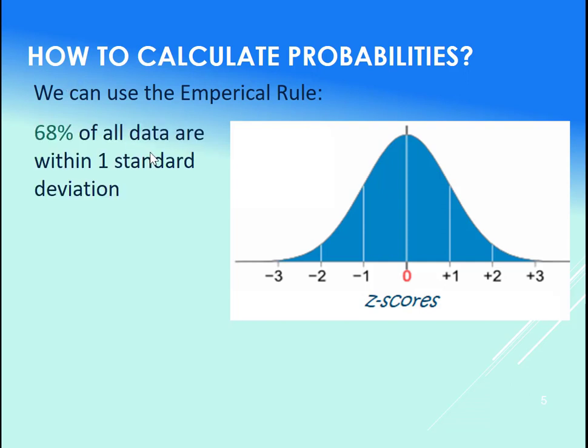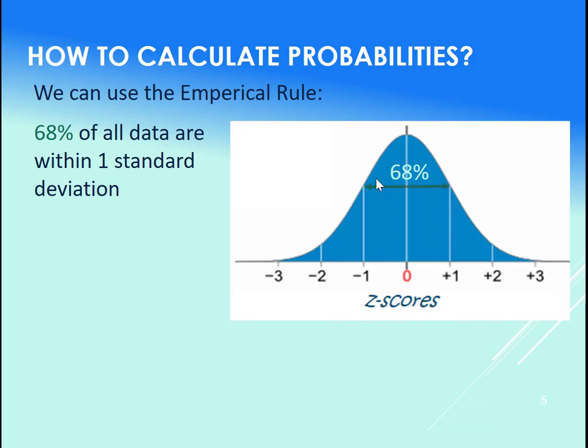So let's say here's our graph. We know that 68% of all data are within one standard deviation of the mean. So under this, between minus one and one here under the curve, we have 68% of our data.